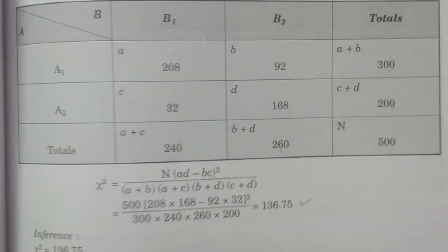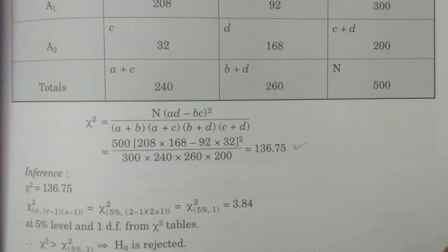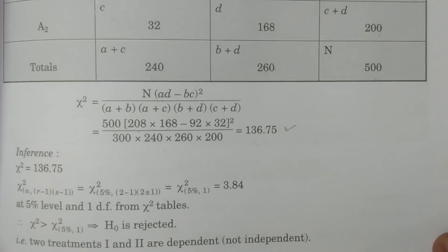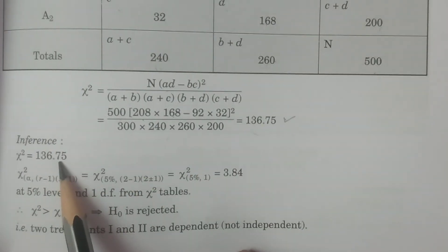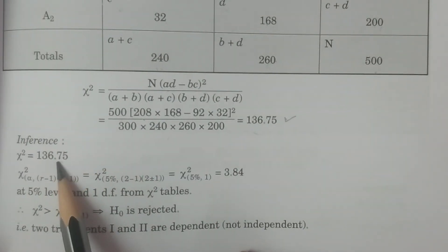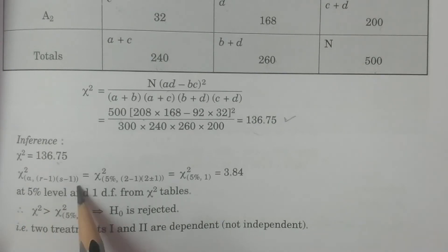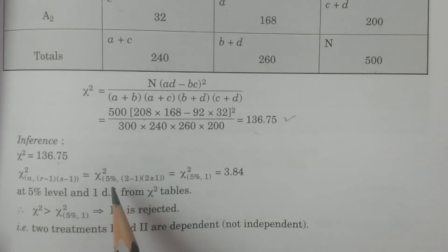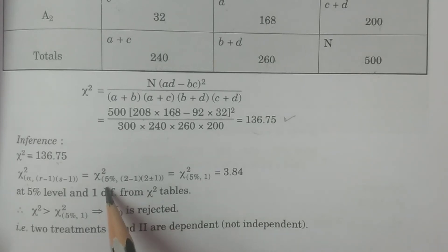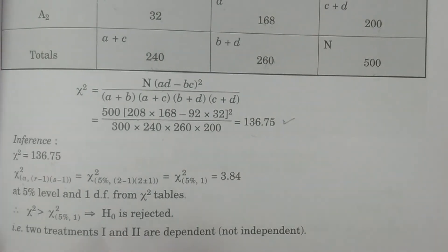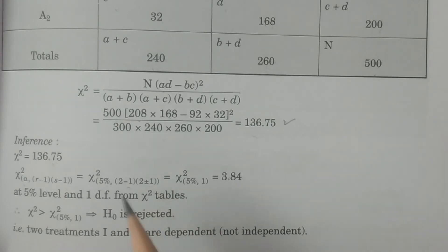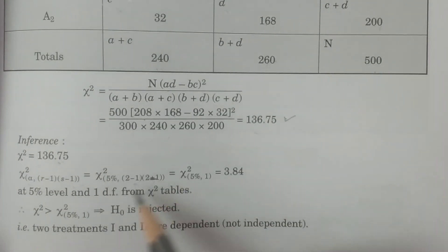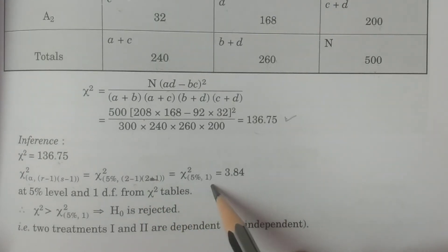For comparison and conclusion: the chi-square calculated value is 136.75. The level of significance is 5% (since it is not given, I am considering 5%). The degrees of freedom are (r minus 1)(s minus 1) equals (2 minus 1)(2 minus 1) equals 1.